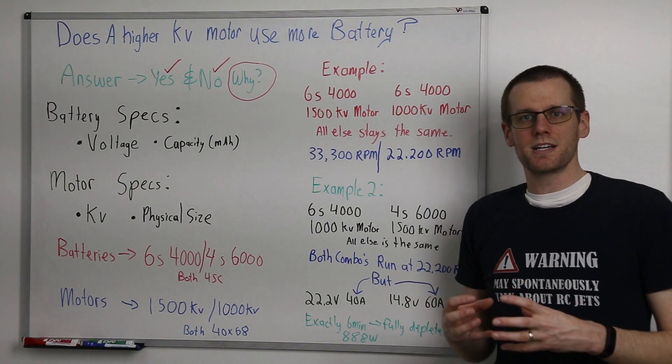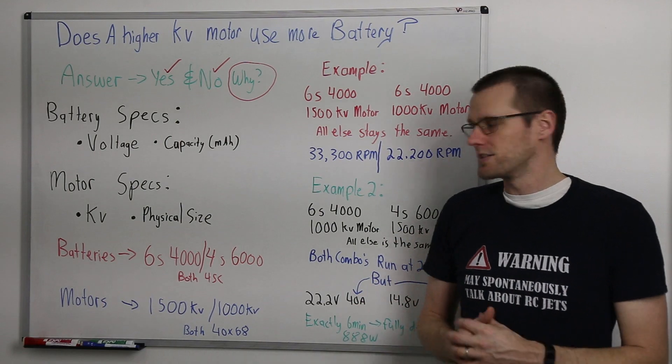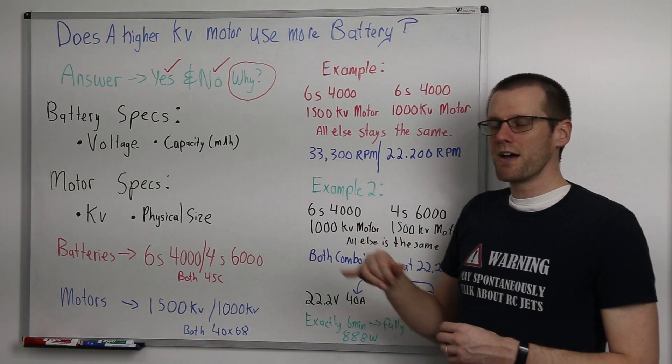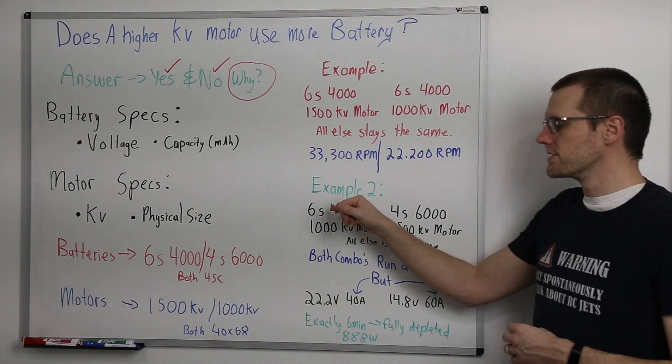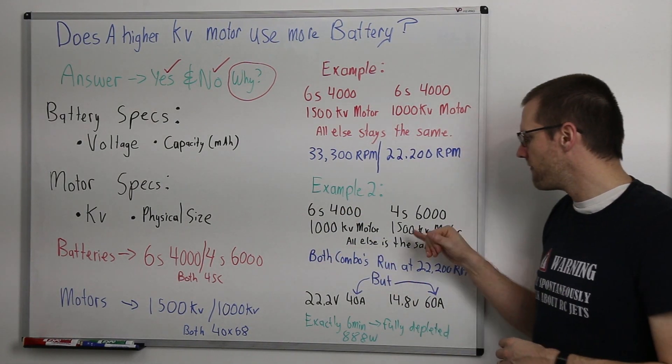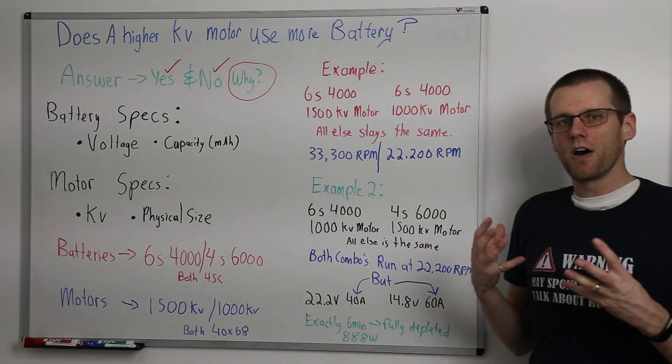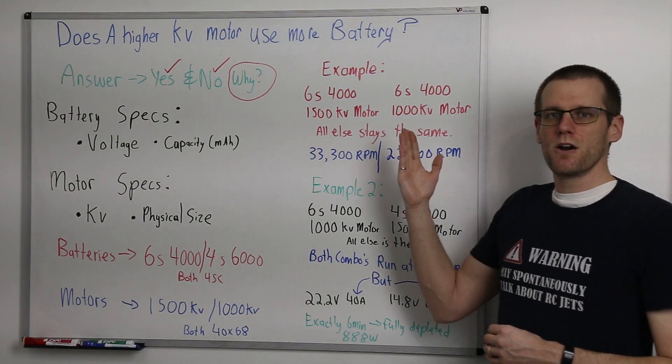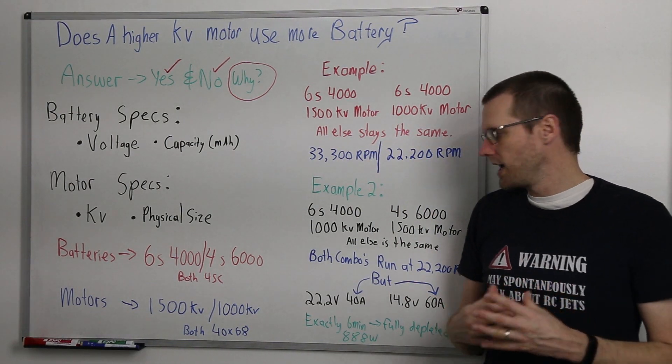Same with our first example. Those battery packs have the exact same amount of energy because they are identical. Even though these are not identical, same energy. Now the big difference here is we have our 1000 kV motor on the 6s battery pack and we have our 1500 kV motor on our 4s battery pack. And all else as like our previous example is going to remain the same.